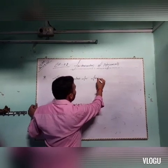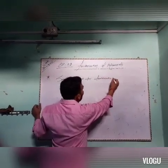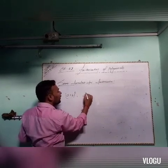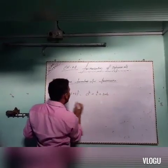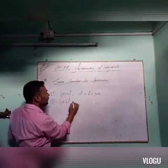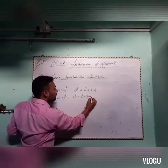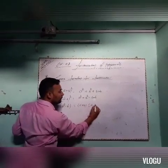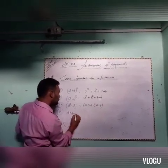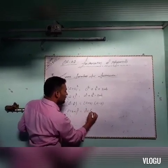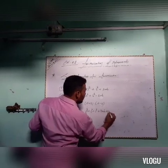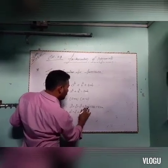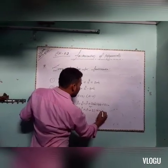Some formulas for factorization. First: (a + b)² equals a² + b² + 2ab. Second: (a − b)² equals a² + b² − 2ab. Third: a² − b² equals (a + b)(a − b). Fourth: (a + b + c)² equals a² + b² + c² + 2ab + 2bc + 2ca, which can also be written as a² + b² + c² + 2(ab + bc + ca).